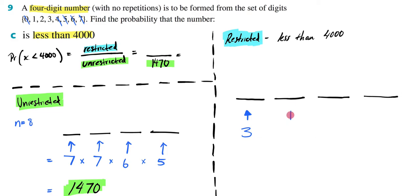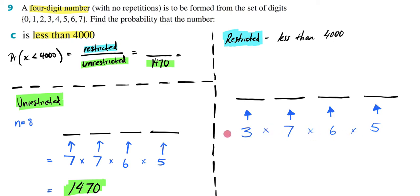I then move on to the next position and ask myself how many options I have. I've already used either 1, 2, or 3, so I've already used one number. There are really no restrictions for the second position — it could be anything. Knowing that there are a total of eight digits, I subtract one because I've used one already, which means I'm left with seven. The same logic follows for the remaining ones — it's just going to be 6 and then 5. Multiplying all of those together: 3 times 7 times 6 times 5 equals 630.